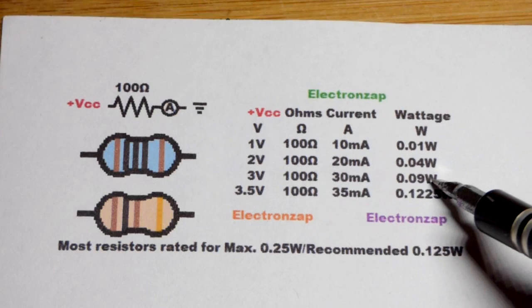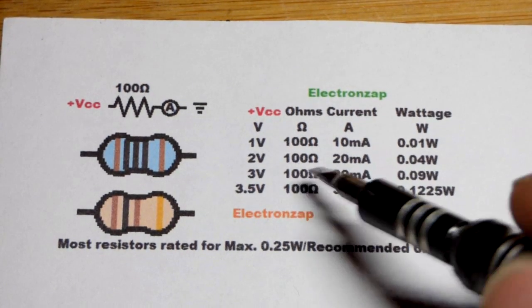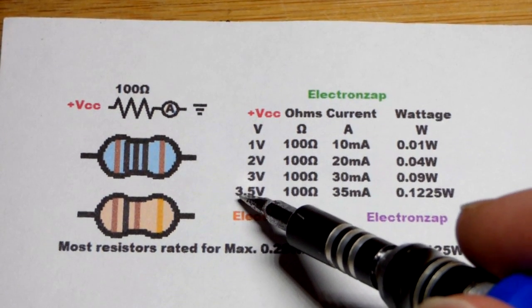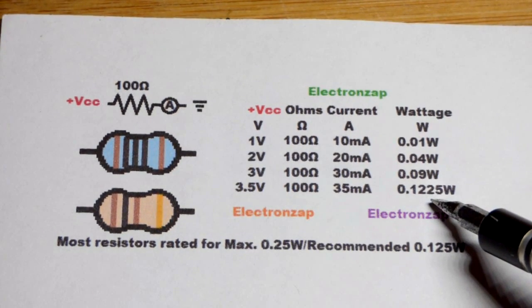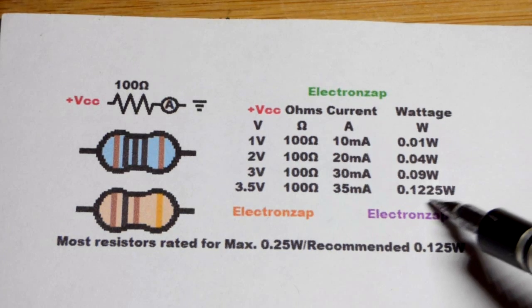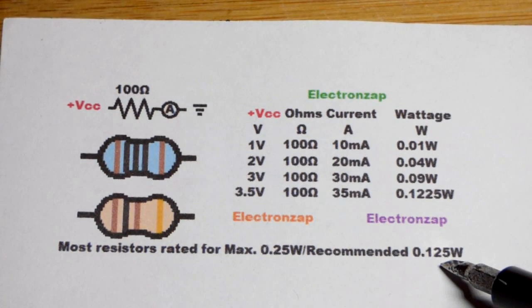At 3 volts, 0.09 watts. Getting pretty warm there, so we're not going to bump it up a whole other volt. We're going to go to 3.5 volts for 35 milliamps, and we'll end up with 0.1225 watts, which is pretty much where we should stop.